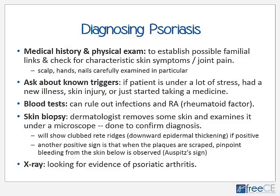Blood tests do not rule psoriasis in, but they can rule it out — looking for markers of infections or rheumatoid factor that would indicate RA rather than PA. The best way to confirm the diagnosis is a skin biopsy, where a dermatologist removes some skin and examines it carefully under a microscope.